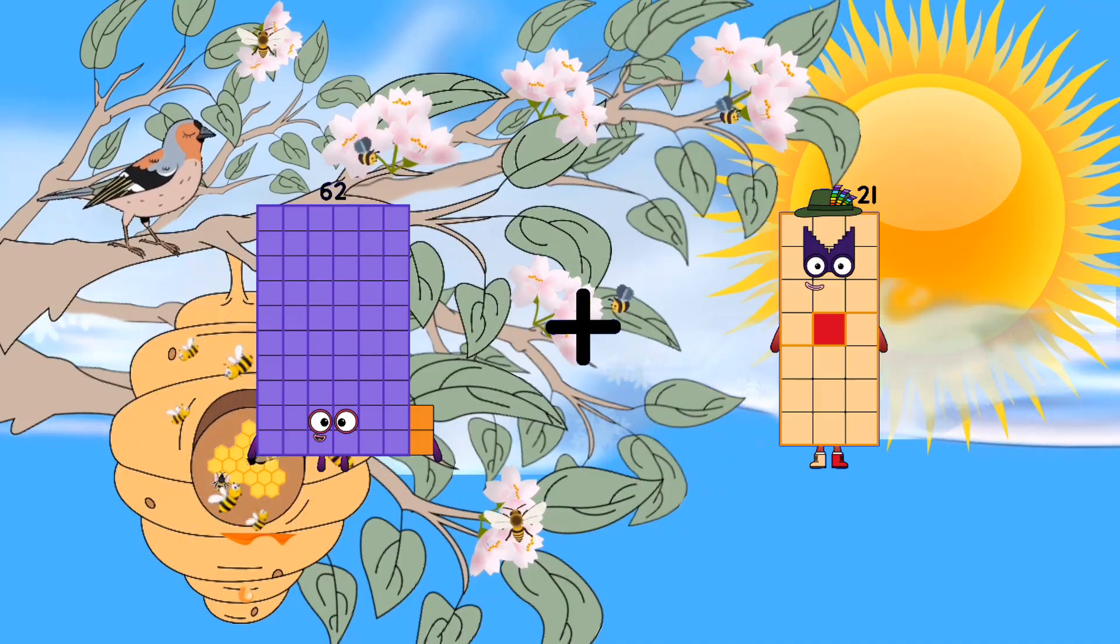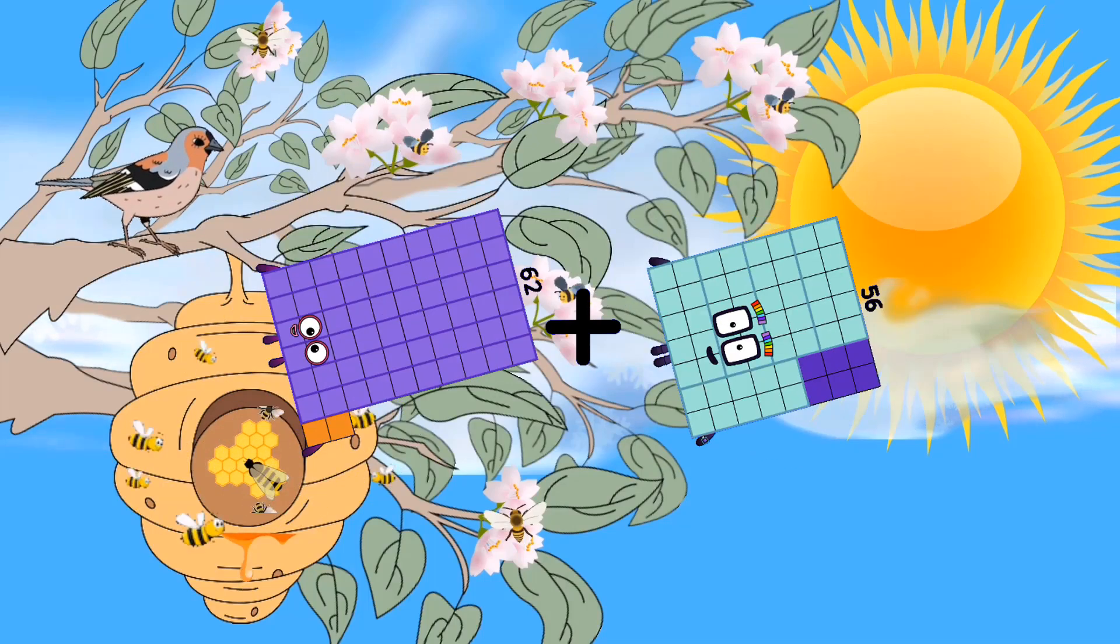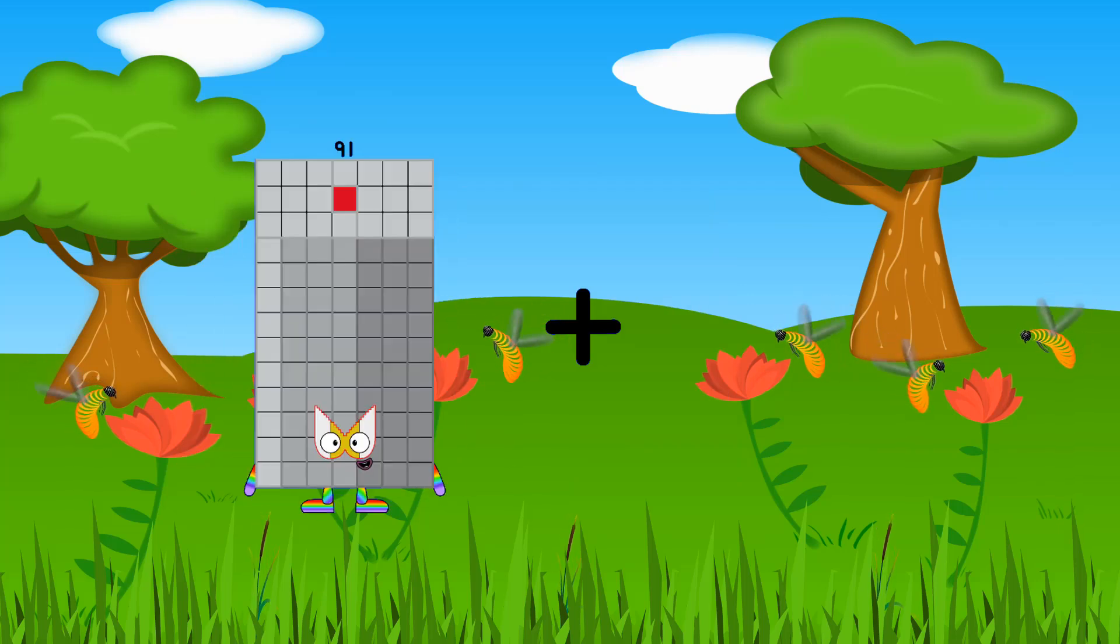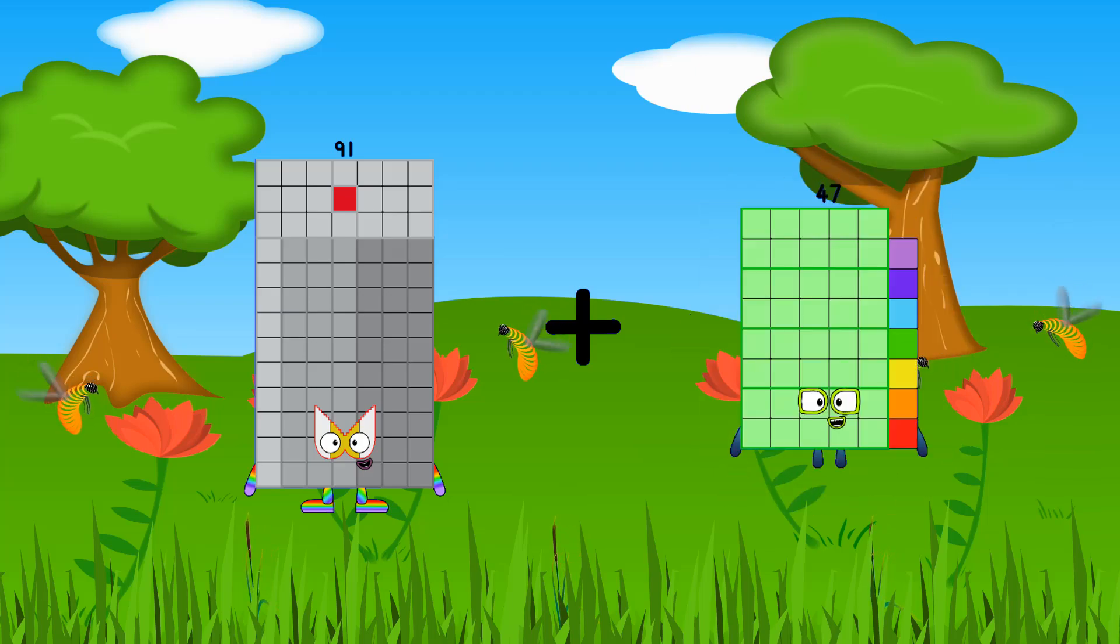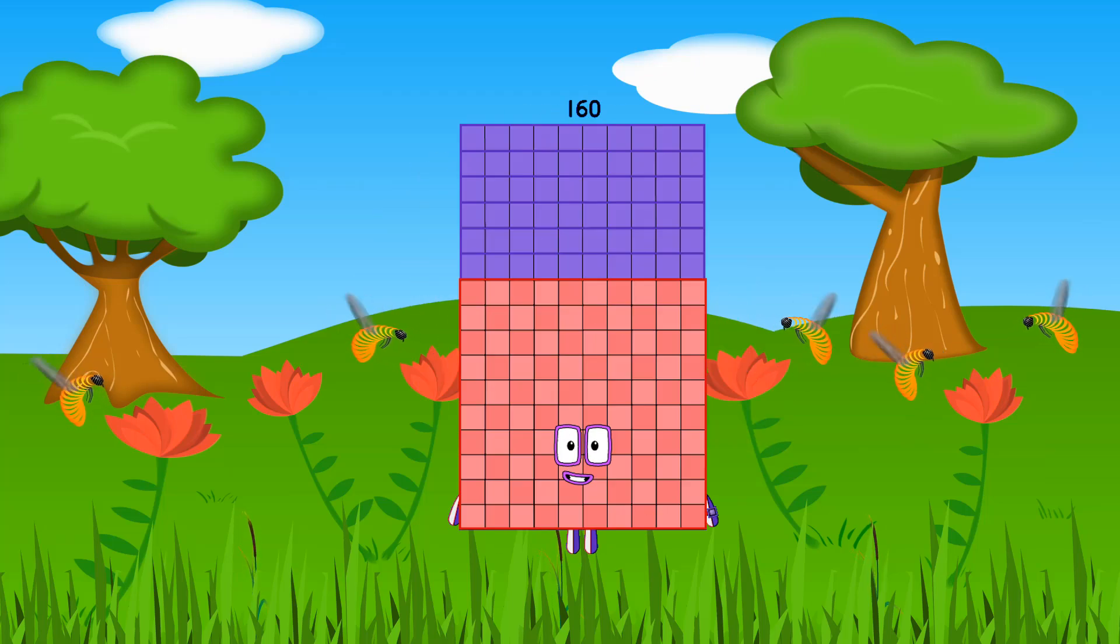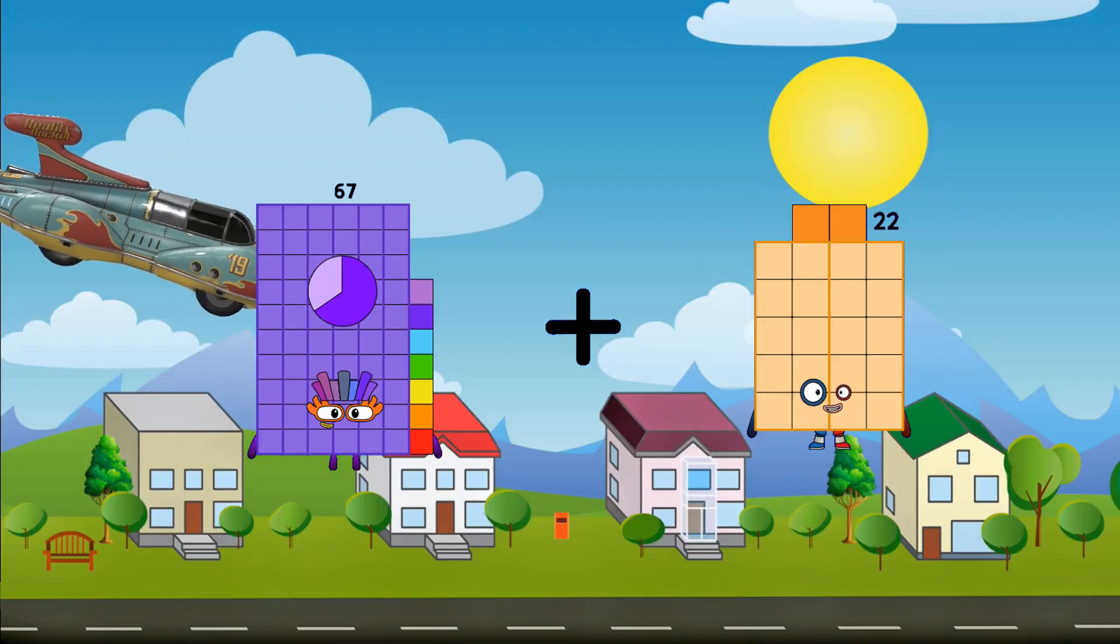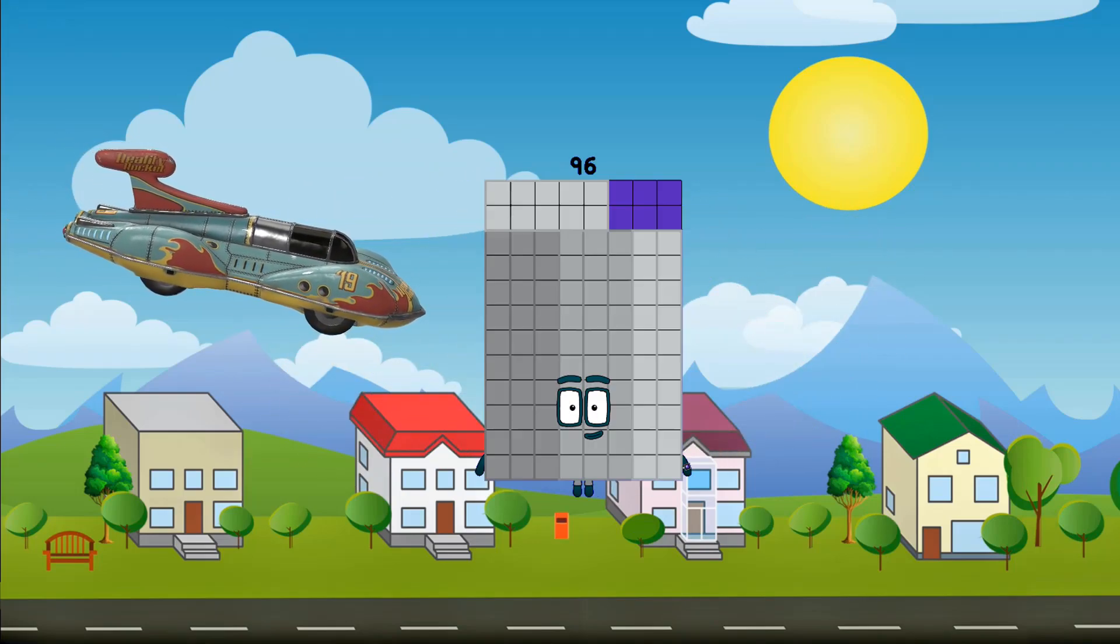62 plus 56 equals 118. 91 plus 69 equals 118. 67 plus 29 equals 96.